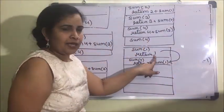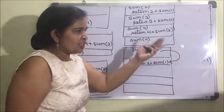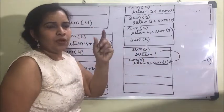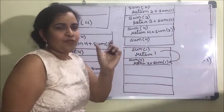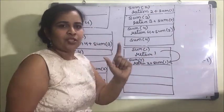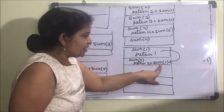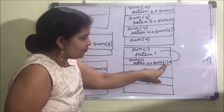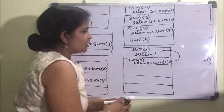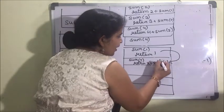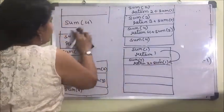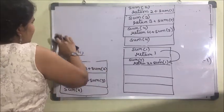When returning any value, it is passed to the statement from where the function was called. So sum(1) will be replaced by 1. In the next recursion...